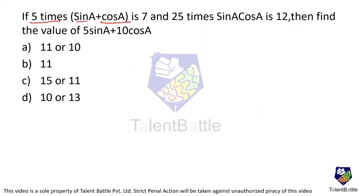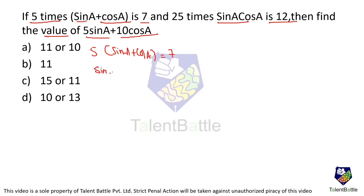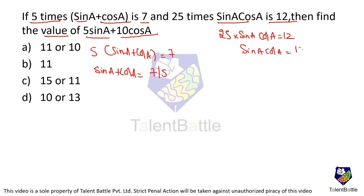5 times (sin a + cos a) is 7 and 25 times sin a · cos a is 12. Find the value of 5 sin a + 10 cos a. From the first equation, sin a + cos a = 7/5. From the second equation, sin a · cos a = 12/25.